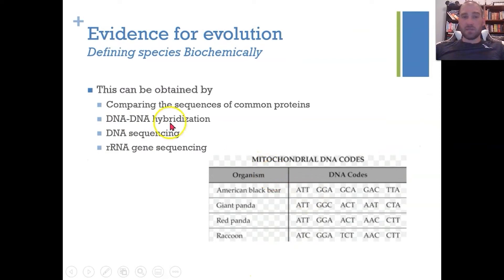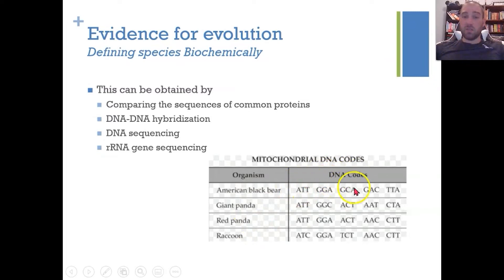Here's a quick example of DNA sequencing. We can look at a black bear, giant panda, red panda, and raccoon, and examine a specific gene and look at the DNA within that gene. We can look for differences — the more differences there are, the longer it's been since these organisms shared a common ancestor.